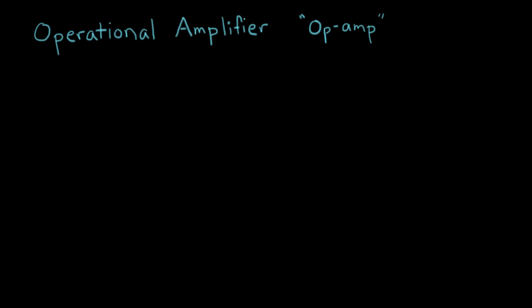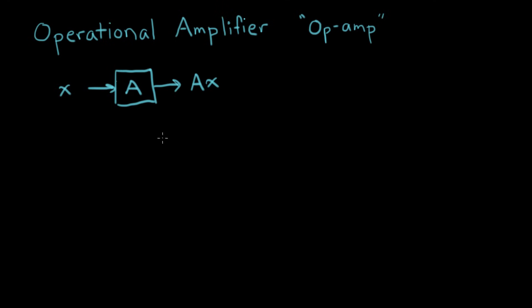We're going to talk about the operational amplifier, or op amp for short. This is the workhorse of all analog electronics. An amplifier is anything that you put an electronic signal in and you get out a larger version of the signal. So this would be an amplifier with some sort of gain. If I put a signal X in here — usually a voltage or a current — then the signal that comes out is A times X. And that's what we mean by amplification. A signal X is anything we're interested in: a voltage or a current. When we put it through an amplifier, we get a larger version of it. This is a really common activity in electronic design.